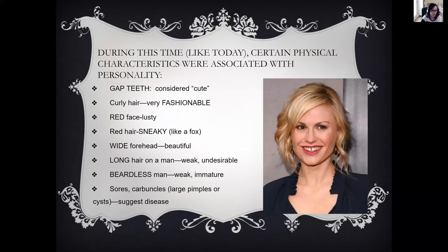Even in the poetry excerpts, Chaucer mentions many physical characteristics, because during this time — like today — certain physical traits were associated with personality. Gap teeth, like the Wife of Bath's, were considered cute and meant good things were coming for you. Curly hair was fashionable. A red face meant you were strong and lusty. Red hair could mean you were sneaky like a fox — people with red hair might be called 'the fox.' A wide forehead was beautiful. Long hair on a man was considered weak and undesirable. A beardless man was also considered weak and immature. Sores or pimples suggested disease and were looked down upon.